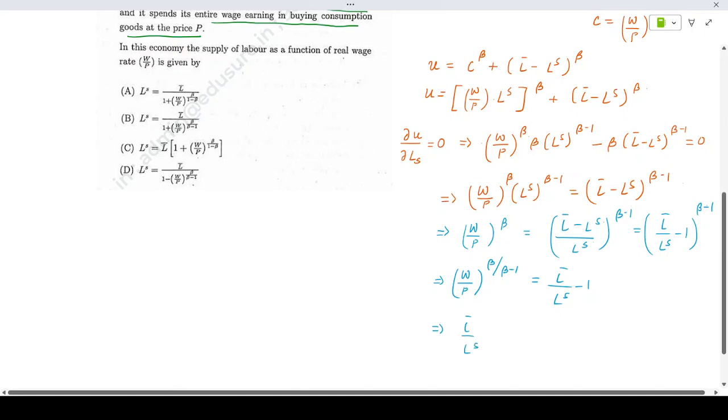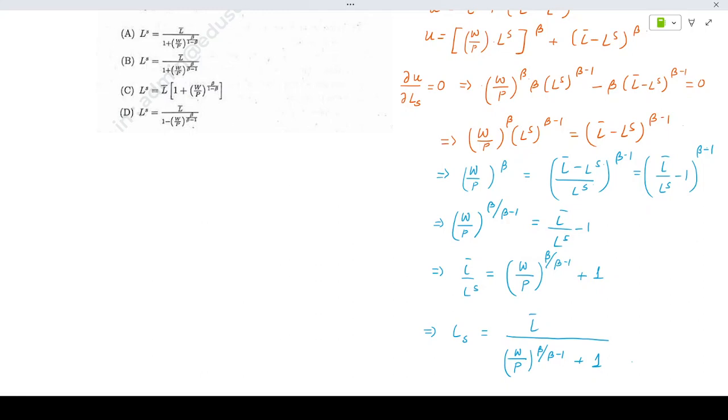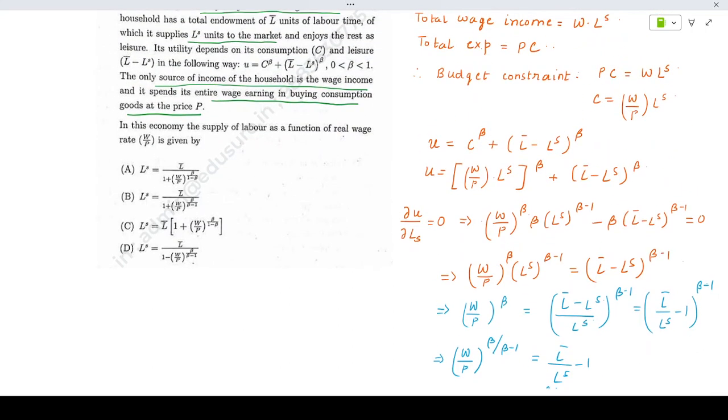L bar minus LS is basically W by P to the power beta by beta minus 1 plus 1. Your labor supply would become L bar divided by W by P to the power beta by beta minus 1 plus 1. And if you look at the options that is option number B in your expressions.